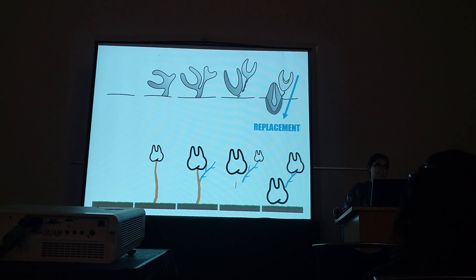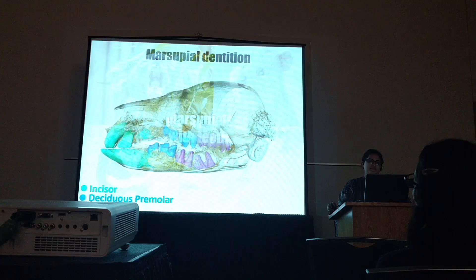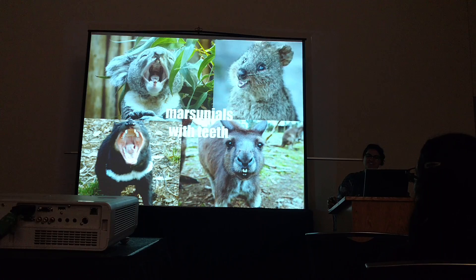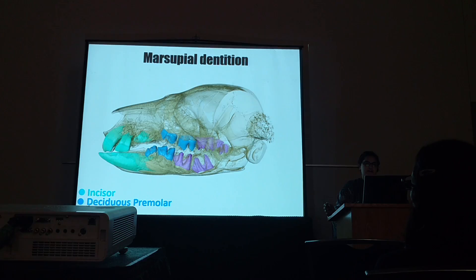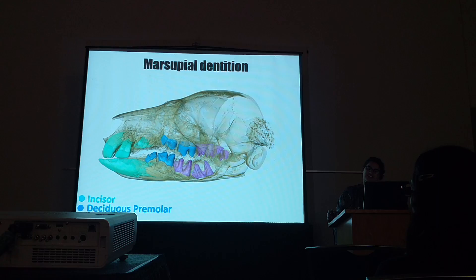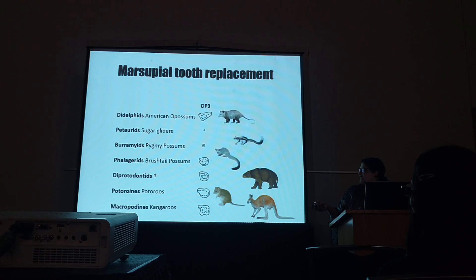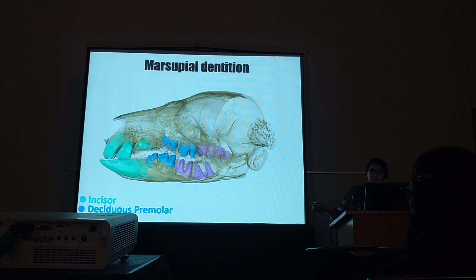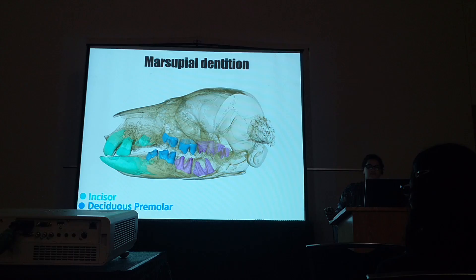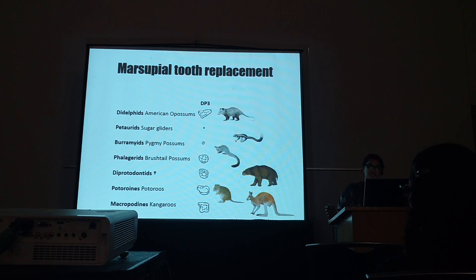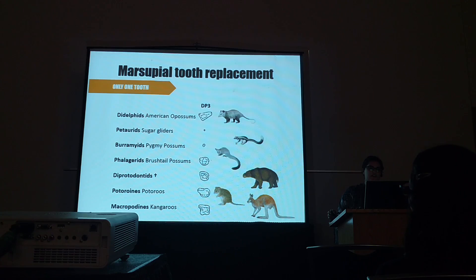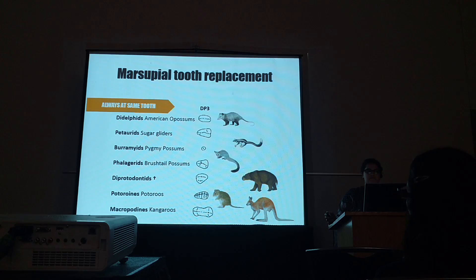I'm from Australia, and we have marsupials, and they also have teeth. I'm interested in looking at tooth development and replacement in marsupials. Marsupials have four types of teeth: incisors, premolars in blue, and molars in purple. They have up to three premolars and four molars. Tooth replacement in marsupials has been observed to happen only to one tooth, and it always happens at the same tooth position — it's the third premolar that is replaced in all marsupials across the globe.